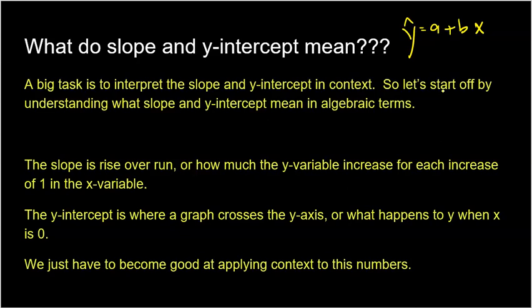We have to make sure we understand how to explain what slope and y-intercept mean in context. In algebra, slope is rise over run — it tells us how much the y variable increases for each increase of 1 in x. The y-intercept is where a graph crosses the y-axis; it's what happens to y when x equals 0. Every y-intercept has an x value of 0.